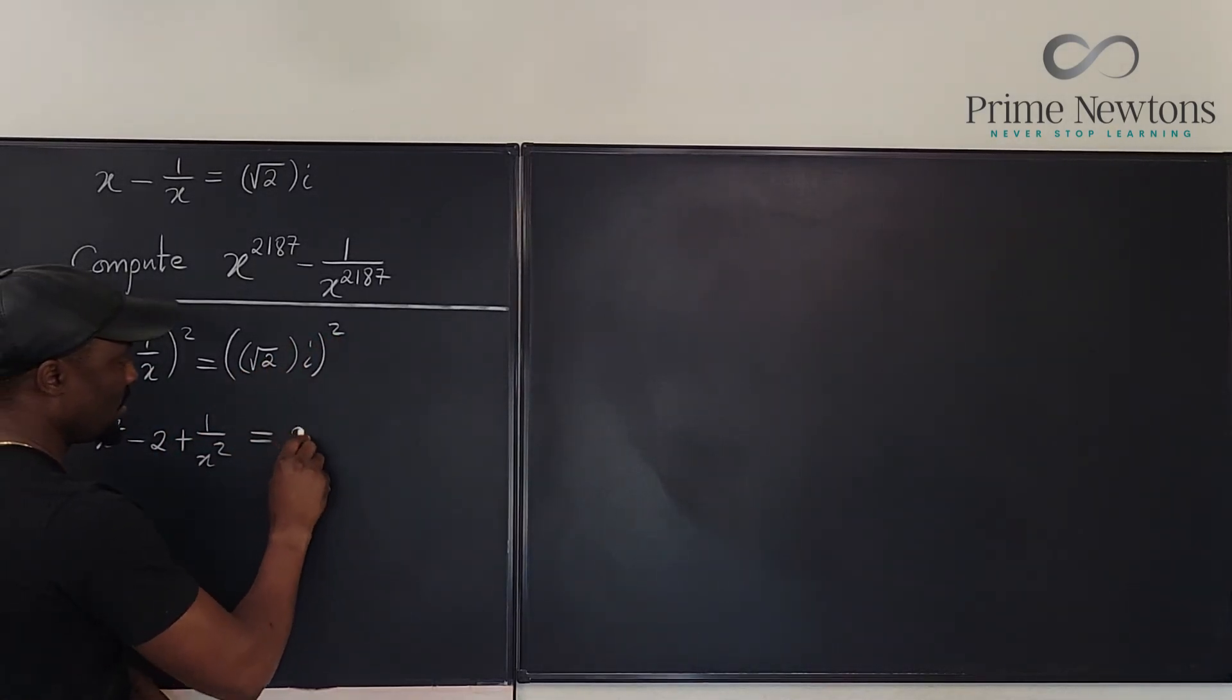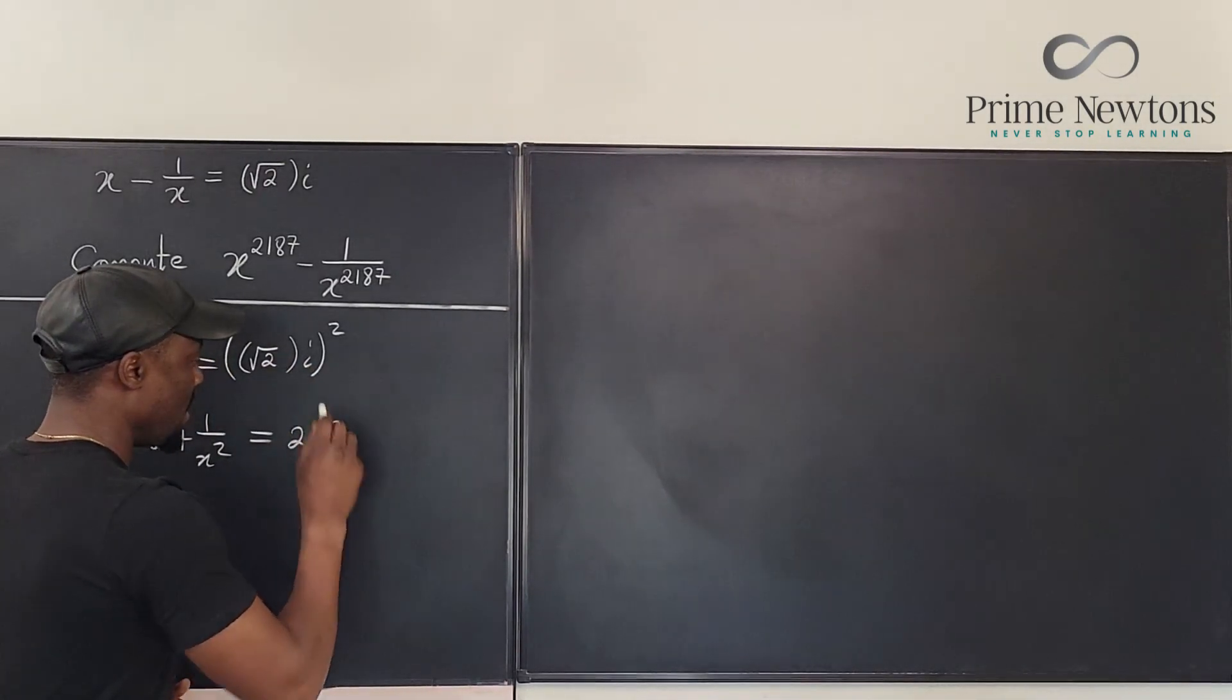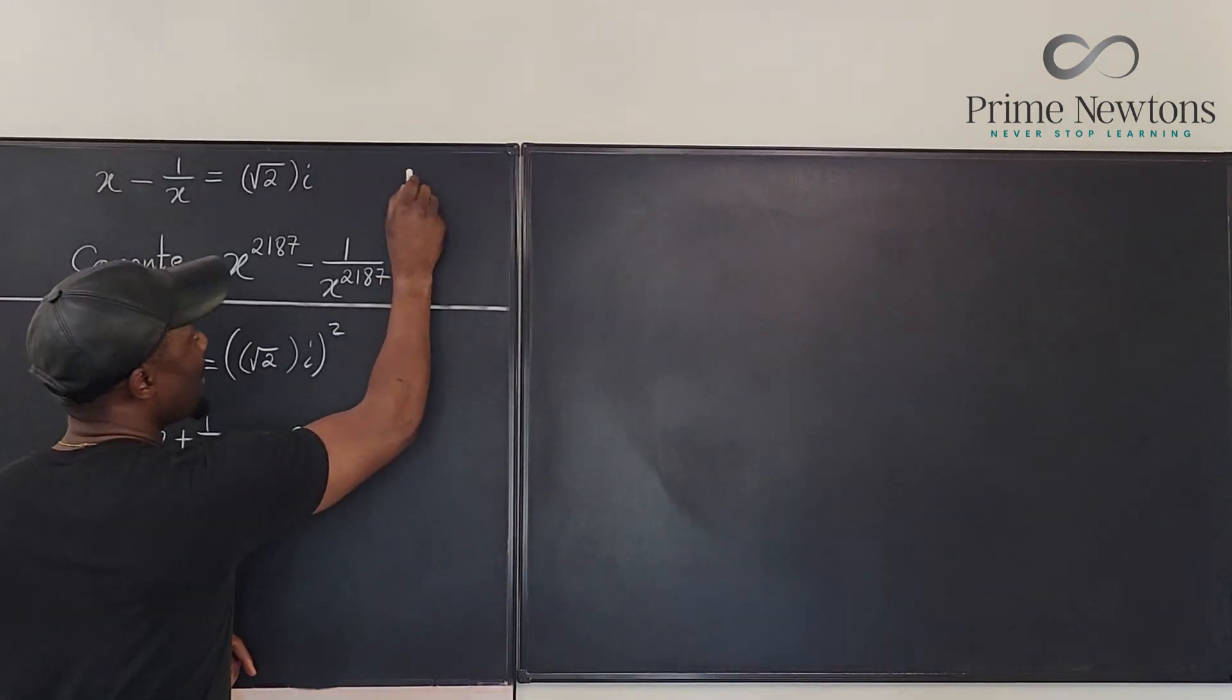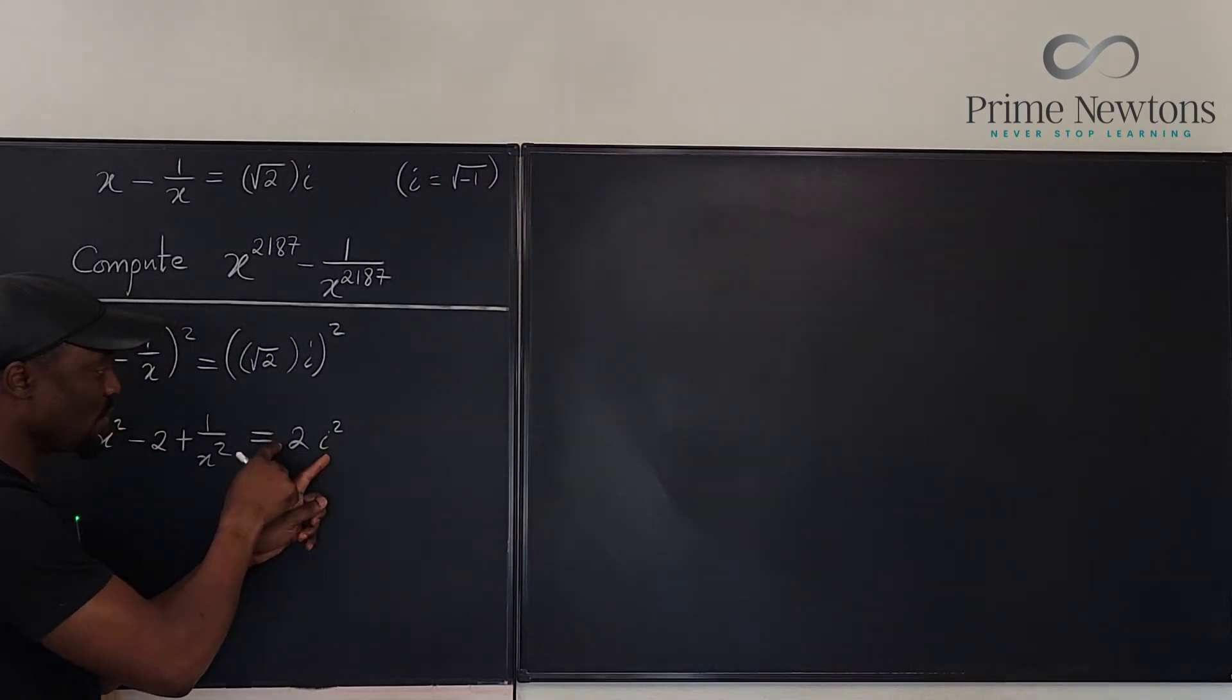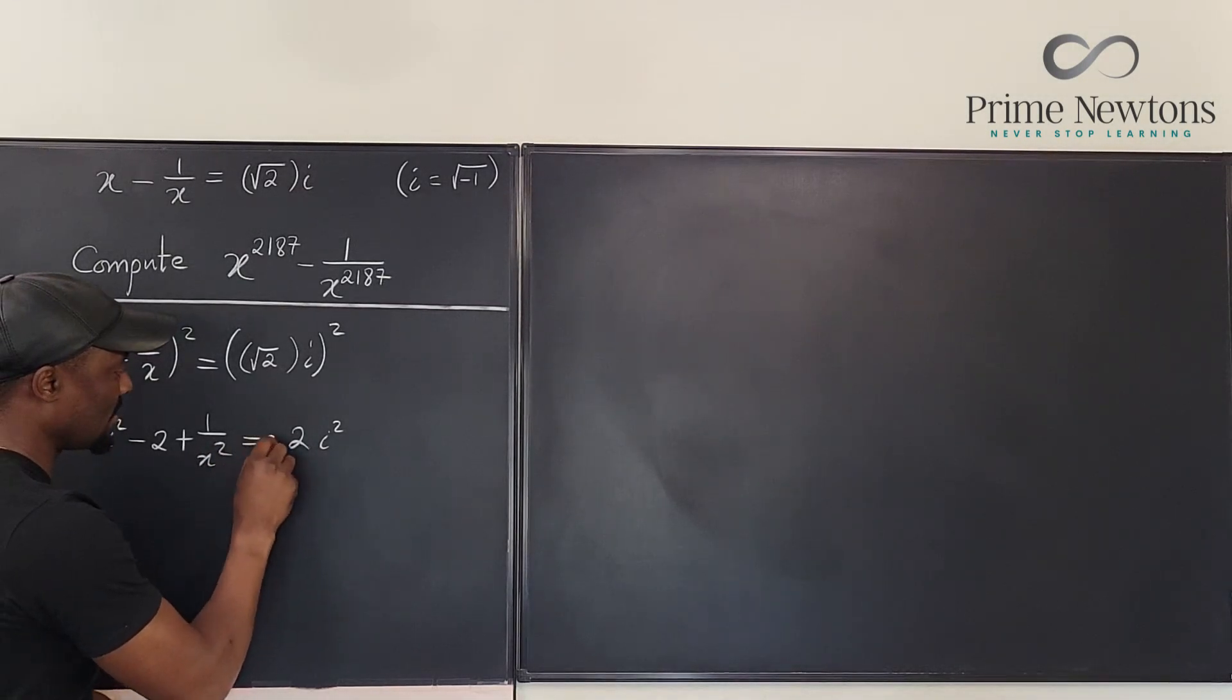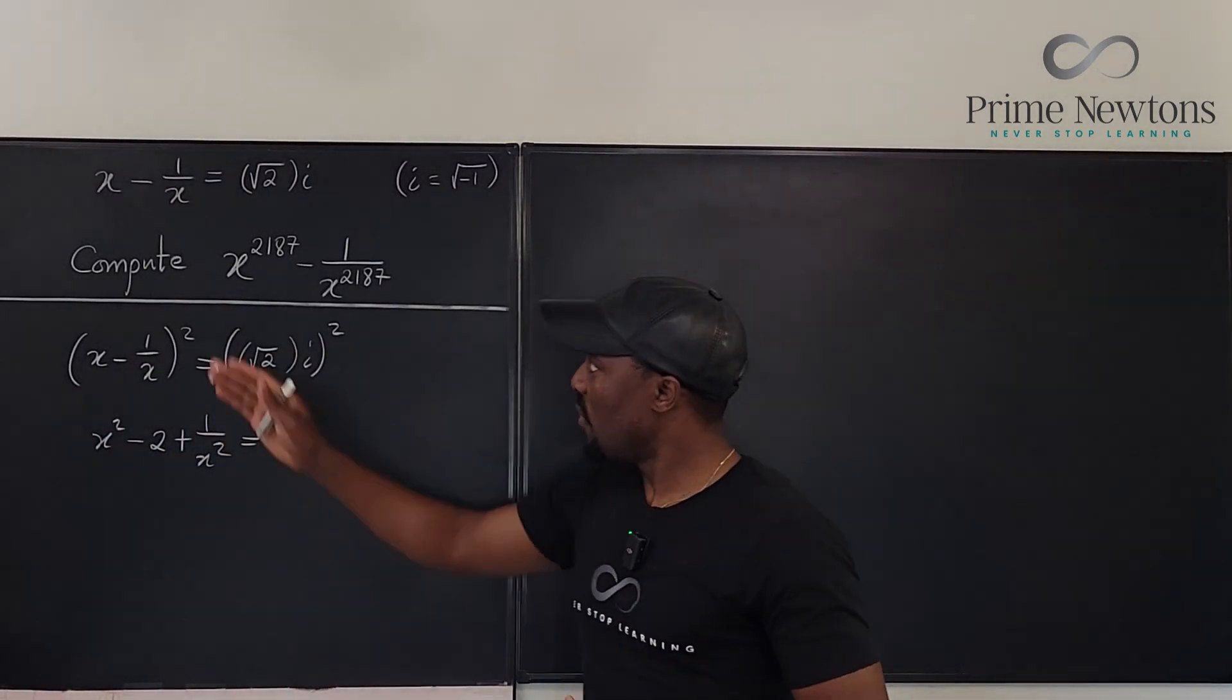But we know that i squared is the same thing as minus 1, because we know that i is the square root of minus 1. Now when you square this, you get minus 1. So minus 1 times 2 will give this answer to be minus 2. So we can get rid of this one.